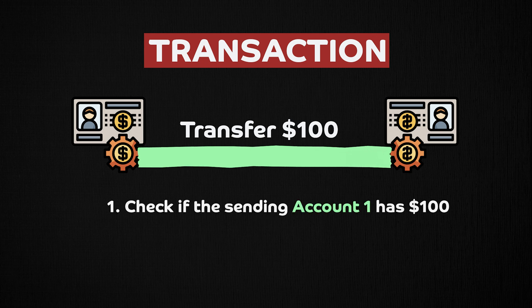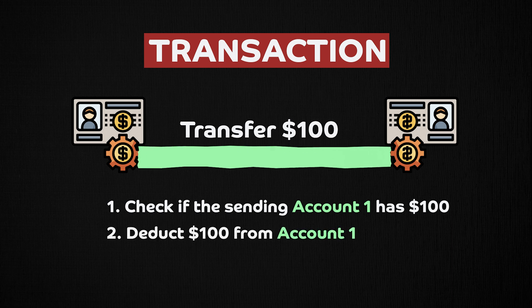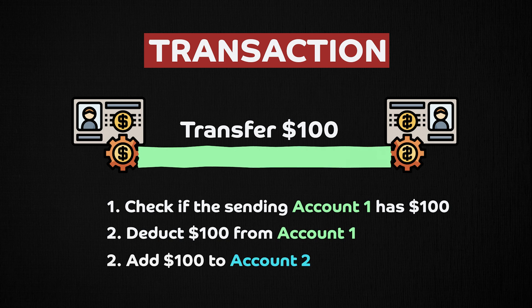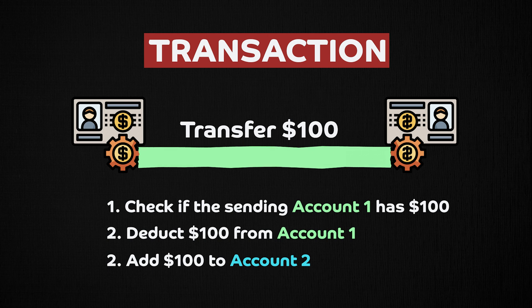The first step is to check if account one has the amount available. The second step would be to deduct $100 from account one. Then you add that $100 to account two. All these three steps constitute one single transaction. Now if any one of the steps fail, the entire transaction will fail.